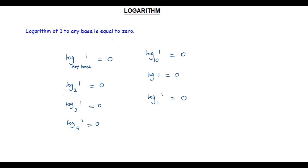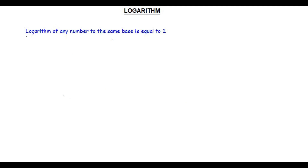When we get 1 in both the argument and base of a logarithm, that is also equal to 0. Some students may think that when base and argument are equal the value is 1, but that only happens for values other than 1. So log 1 to the base 1 is equal to 0, because log 1 to any base is equal to 0.